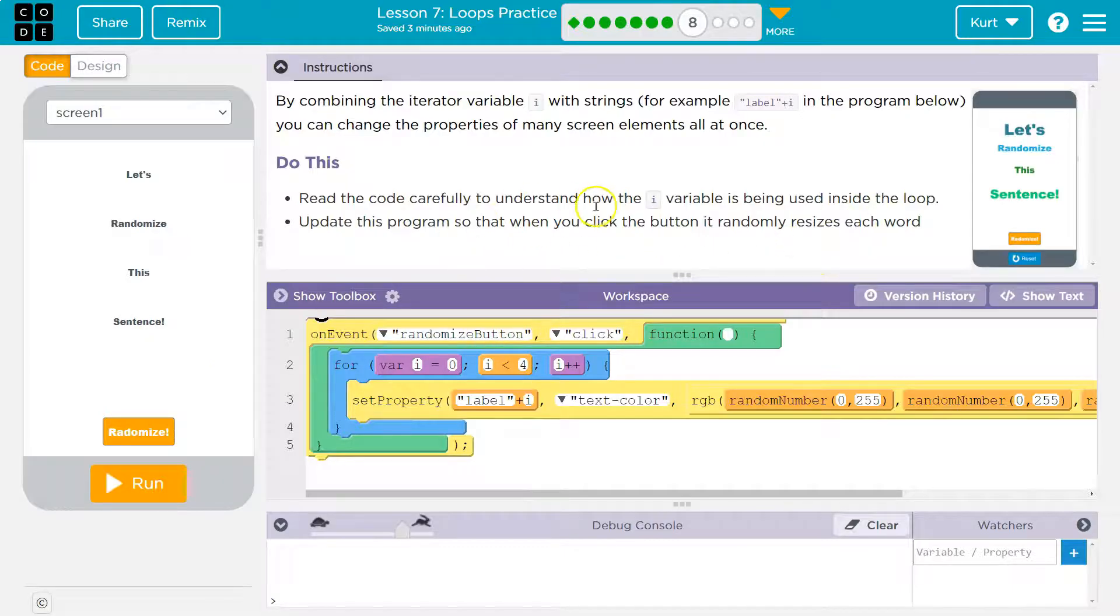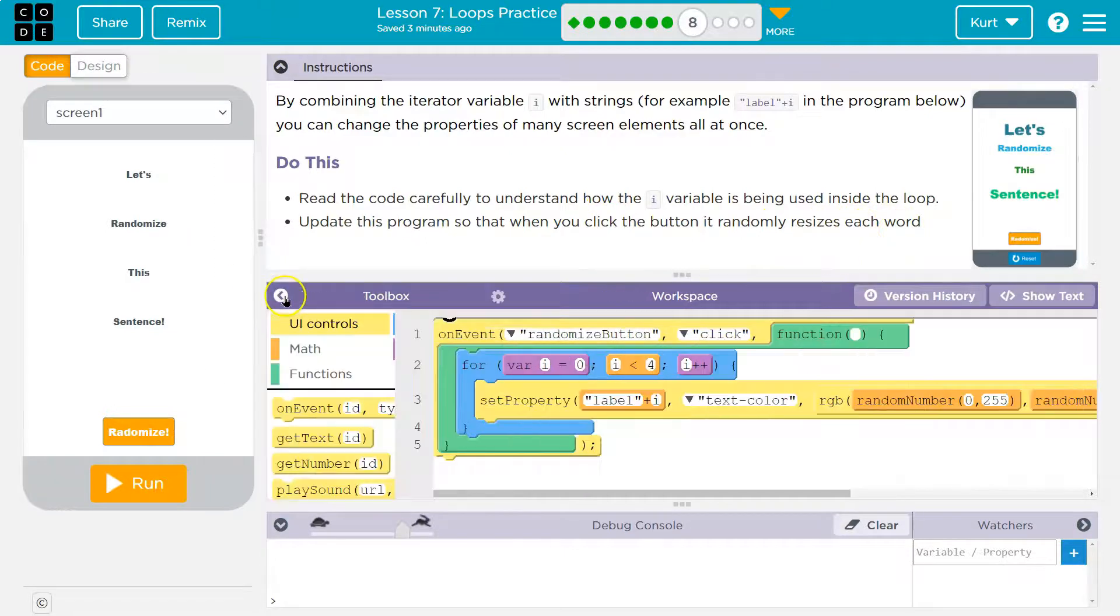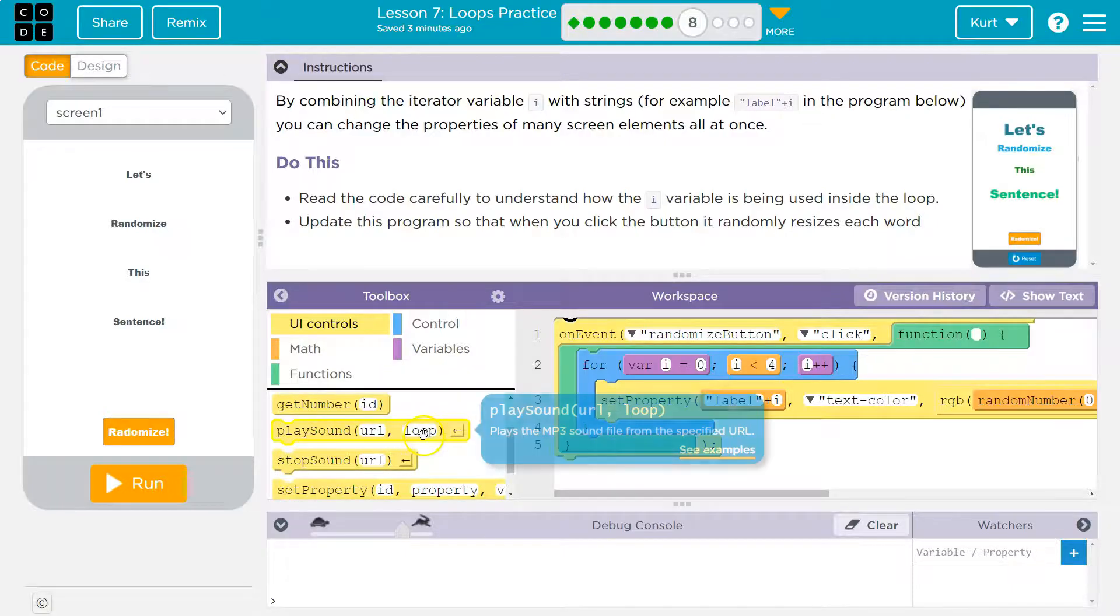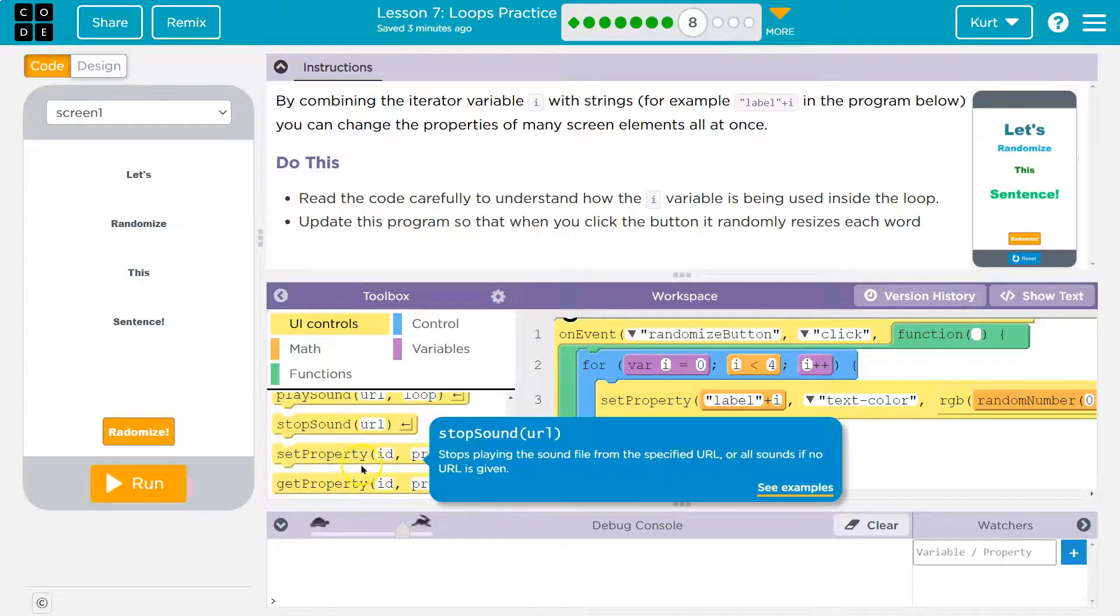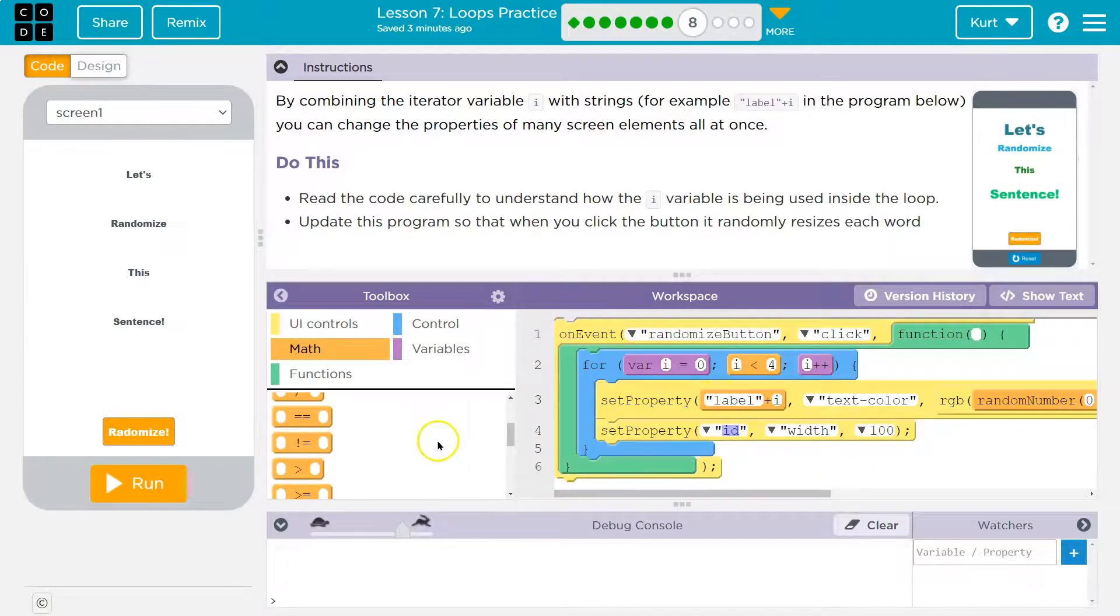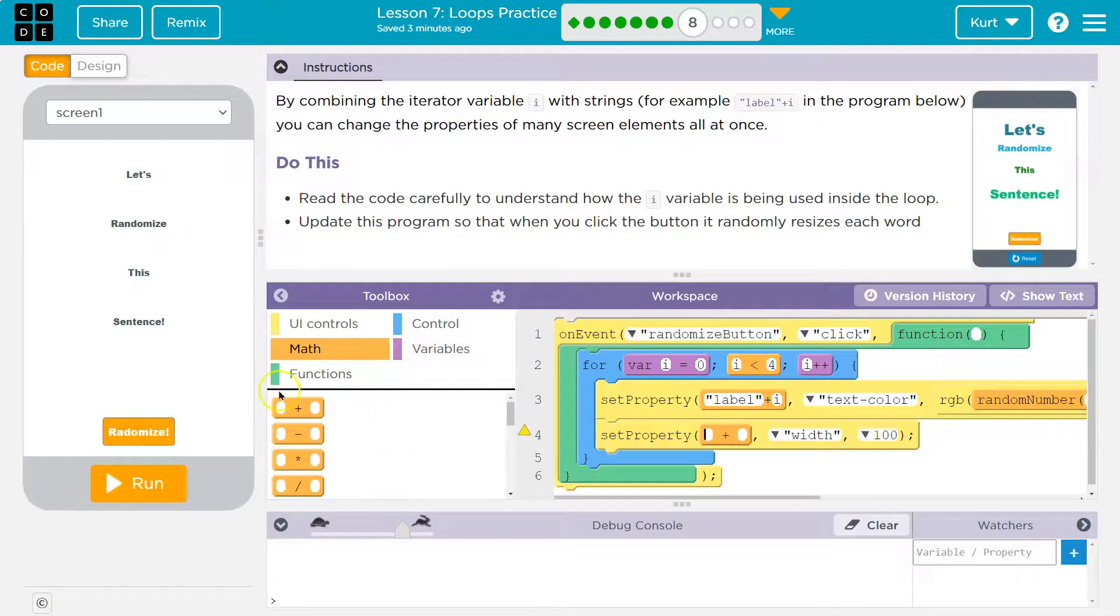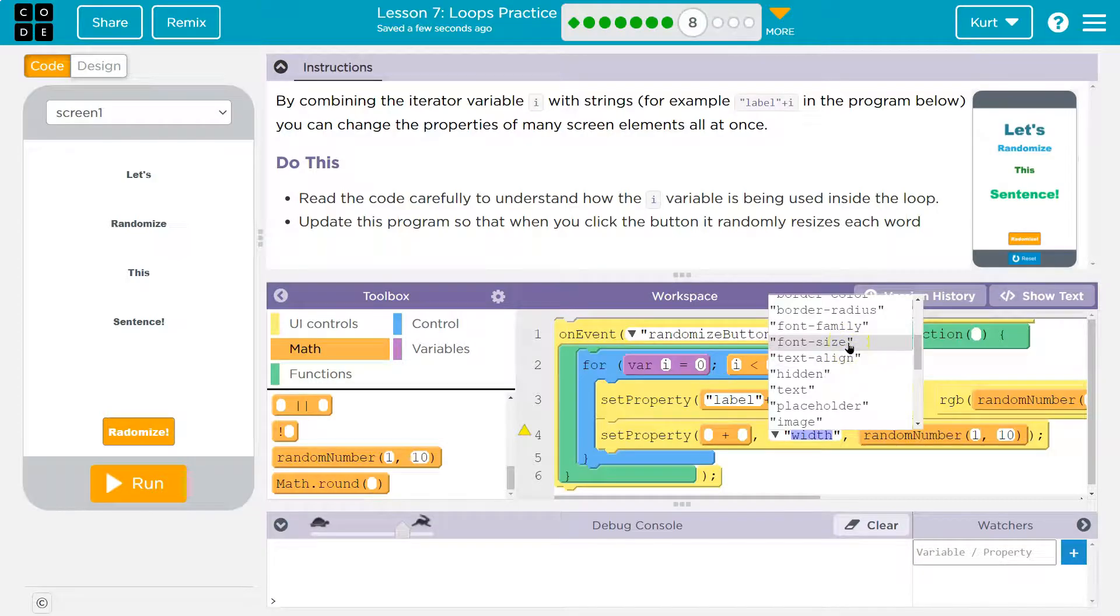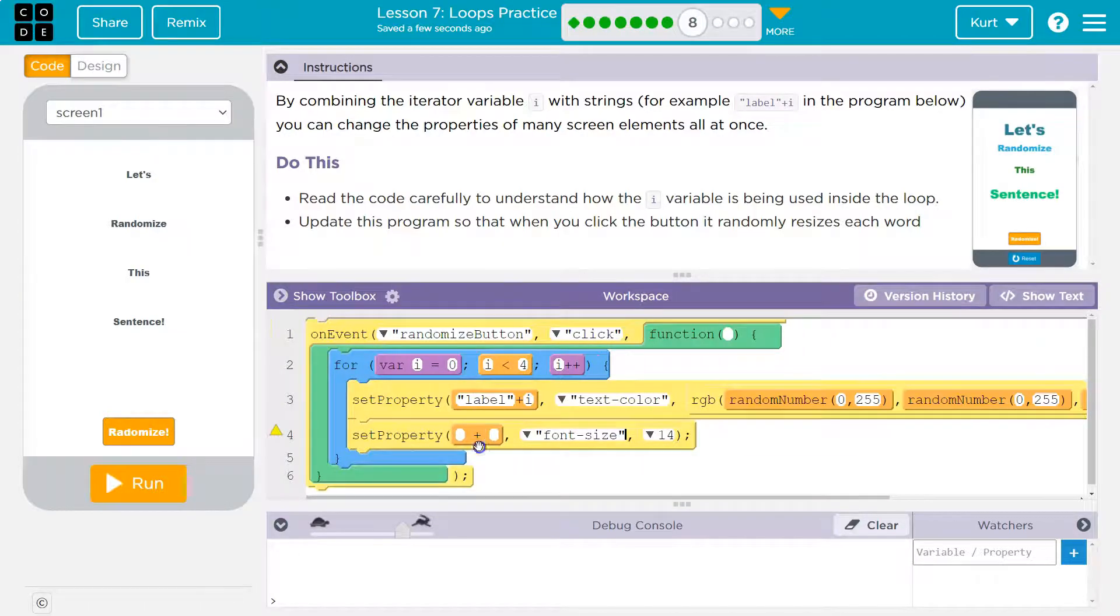All right, what are we doing? We want to, so that when you click the button, it randomly resizes each word. Okay, so we can use this for loop still. It's the point they were doing last time, but we want to set a different property now. Set property. All right, and then I'm going to grab, like they have here, a plus sign. And then I'm going to use a random number for the size. And then let's pick, it randomly resizes each word. So font size is what we would need.